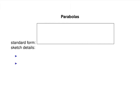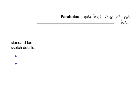First, parabolas. The key here is that you only have x² or y², not both, in your equation. The standard form is y = a(x − h)² + k — this is a regular parabola. There are also sideways parabolas whose equations are given by x = a(y − k)² + b, and those will be sideways parabolas.